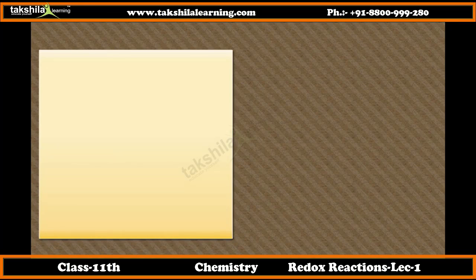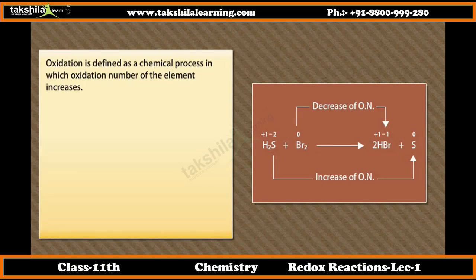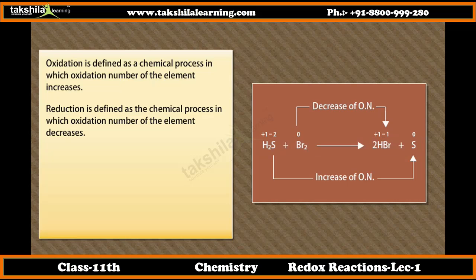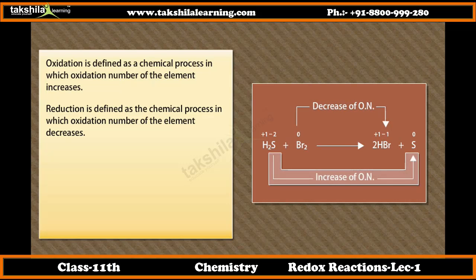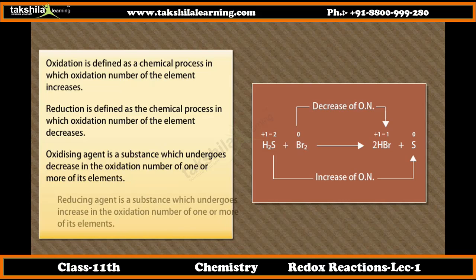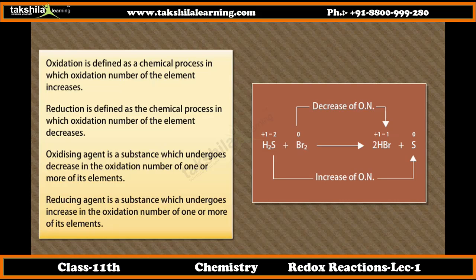Oxidation and reduction in terms of oxidation number. Oxidation is defined as a chemical process in which the oxidation number of the element increases. Consider the reaction between hydrogen sulfide and bromine to give hydrogen bromide and sulfur. The oxidation number of bromine decreases from 0 to -1; thus, it is reduced. The oxidation number of S increases from -2 to 0; hence, H2S is oxidized. An oxidizing agent is a substance which undergoes a decrease in the oxidation number of one or more of its elements.